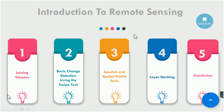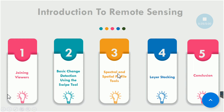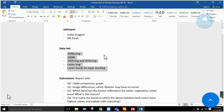Bismillahirrahmanirrahim. This is our third lab of Introduction to Remote Sensing. We have covered some basic tools, basic image adding, and basic functionalities in the first two labs. In this lab, we will be working on joining viewers — that is, linking the viewers — and some basic change detection using the swipe tool. We will also work on the spectral and spatial profile tools, then focus on layer stacking, and finally conclude the lab.